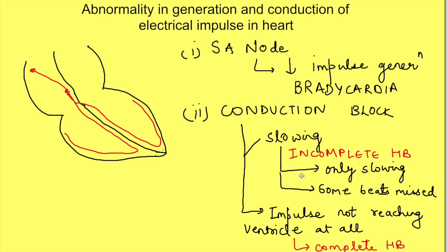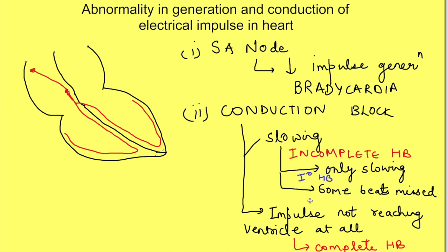If we combine these incomplete and complete heart blocks, we can say that heart block has different grades. Only prolonged duration of conduction is known as first degree heart block. When some beats are missed in between, it is known as second degree heart block. When there is complete block of conduction from atria to ventricles, it is known as third degree heart block.